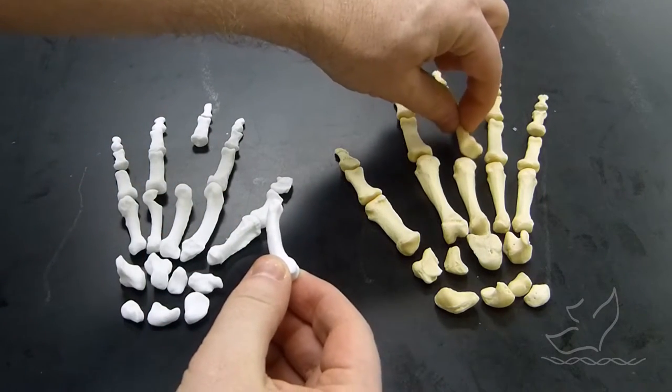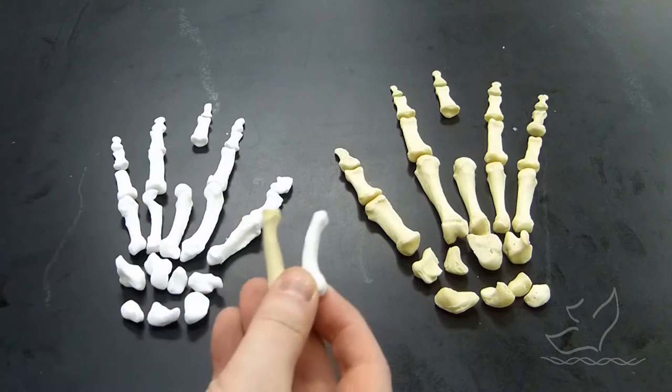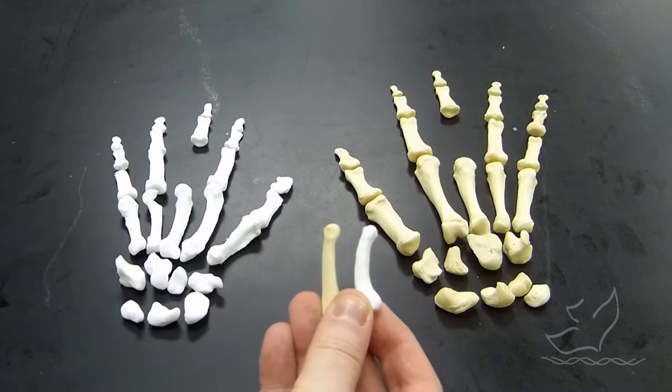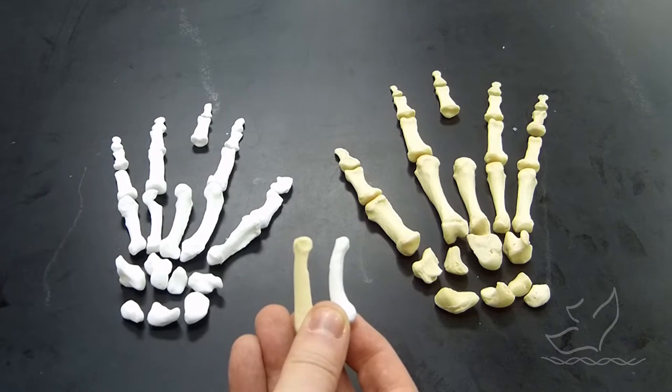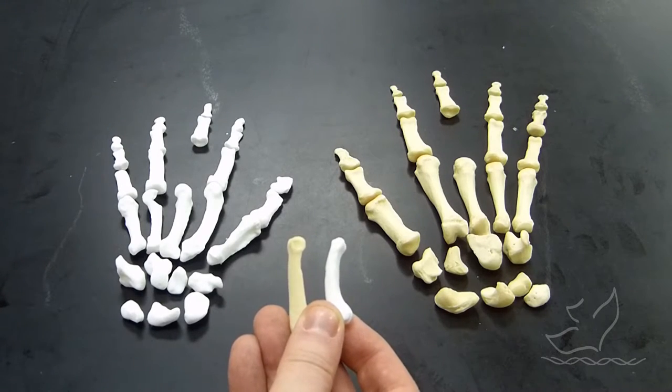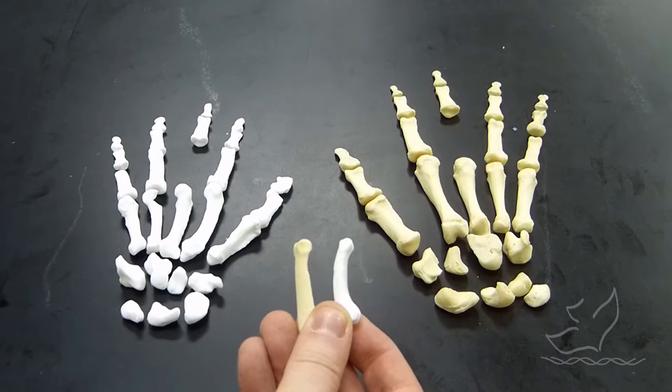Let me grab the same one from the modern human hand and compare them. You can see that the Naledi hand, the bright white one there on the right, is really very different from the sort of yellow bone on the left, which represents Homo sapiens.